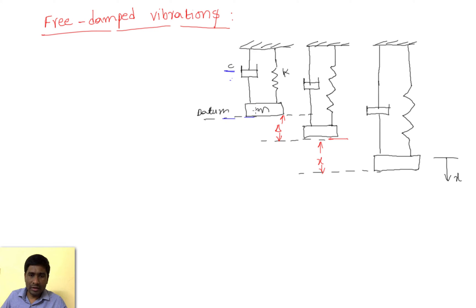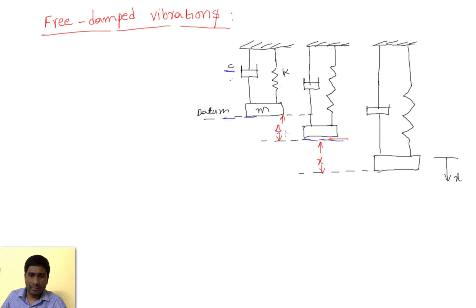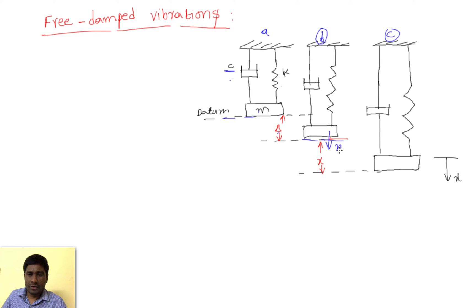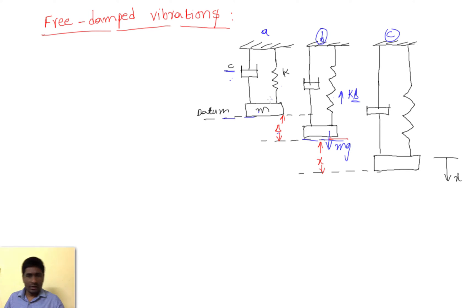This is the system. Initially we have mass m, and when we attach mass m to the spring-damper system, because of this mass it will settle down by stretching an initial displacement delta from the initial position. Position A is the initial position and position B is the equilibrium position. At equilibrium, the spring force k·delta acts upward and gravity mg acts downward.